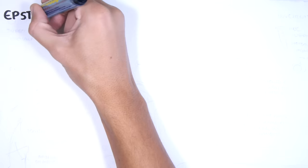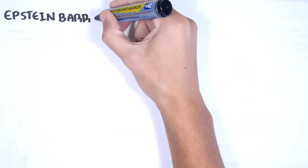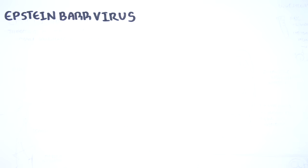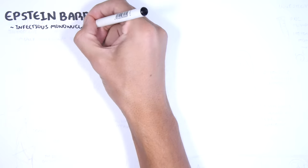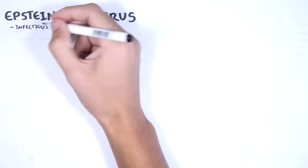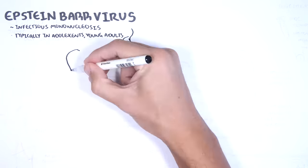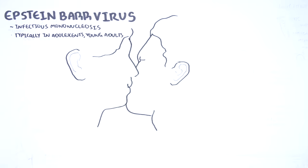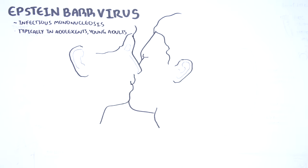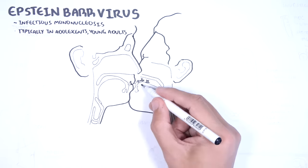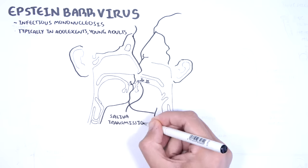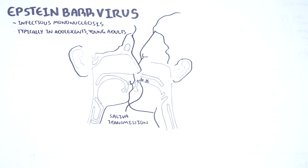The Epstein-Barr virus typically causes an asymptomatic infection, or it can cause acute tonsillitis as part of a bigger infection called infectious mononucleosis, also known as glandular fever. Epstein-Barr virus infections typically occur in adolescents and young adults and are transmitted orally via saliva. This is the reason Epstein-Barr virus infections are also known as the kissing disease.